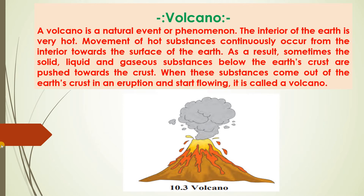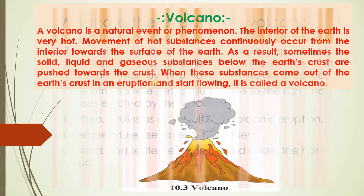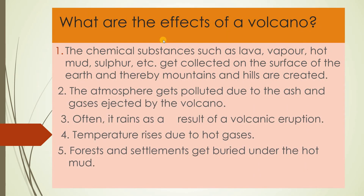Yeh volcano ka picture aap dekh sakte hain — yeh zameen ke andar, arth ke neeche woh saari cheezein hoti hain, liquid aur gas ke roop mein. Aur kabhi-kabhi jo hai woh baahir aana chahti hain — arth ka upar ka bhaag kamzor pad jaata hai to yeh cheezein baahir nikalne ki koshish karti hain. Aur yahi badi maatra mein nikalne lagti hain to iski tarah ka volcano, yaani jwalamukhi kehte hain. What are the effects of volcano? The chemical substances such as lava, vapors, hot mud, sulfur, etc.